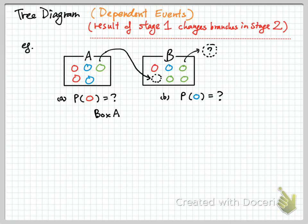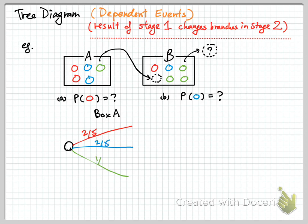So let's take a look at this. Once again, three colors — the ball from box A. There are three possibilities: either you pick a red, a blue, or a green. We can assign probability to each branch. Picking a red one is 2 out of 5, 2 out of 5 for the blue, and 1 out of 5 for the green.